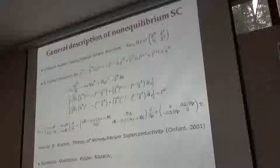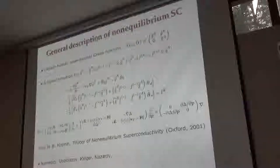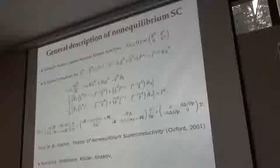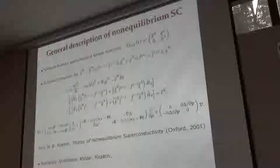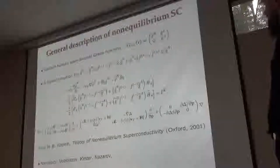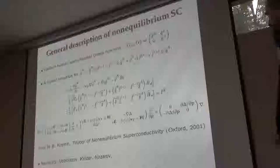The Ginzburg-Landau function shows how quasi-particles adjust to the fluctuating variety of the primaries. In general, it's impossible to solve, and I think that in the most general case even numerics have not been tried. The only possible thing is to use some numerics with some simplification.